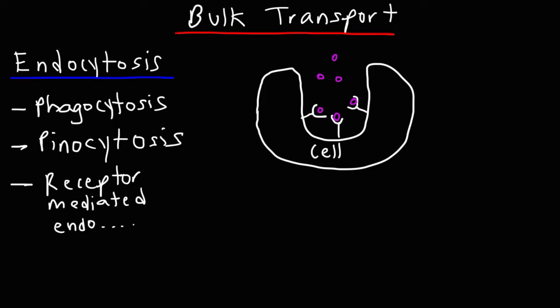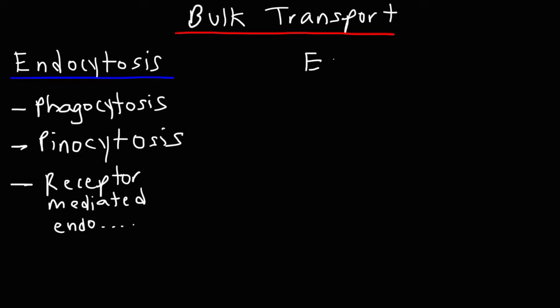Now there's one more type of bulk transport that you need to be familiar with. And it is the opposite of endocytosis. So this one is called exocytosis. The prefix exo means outside or external.